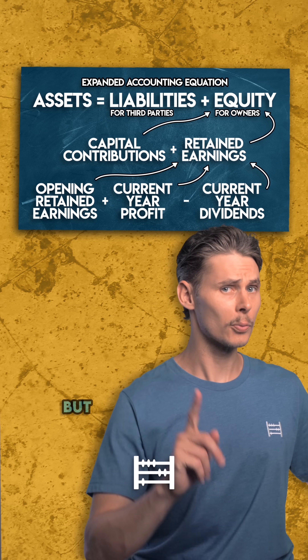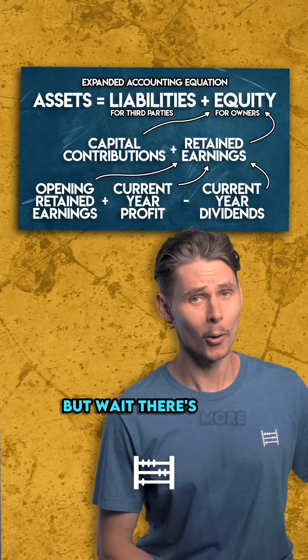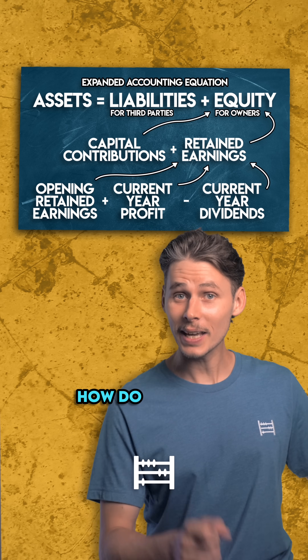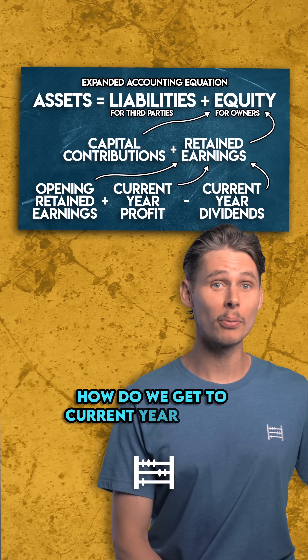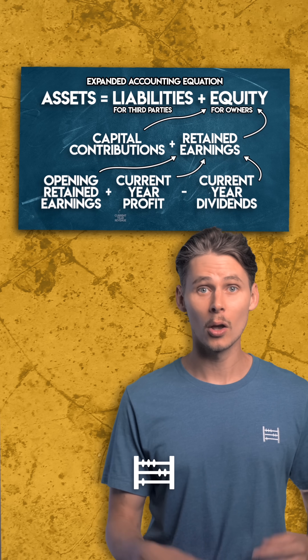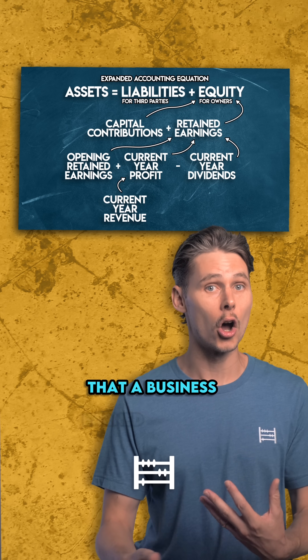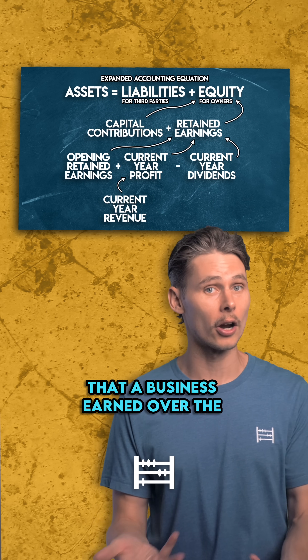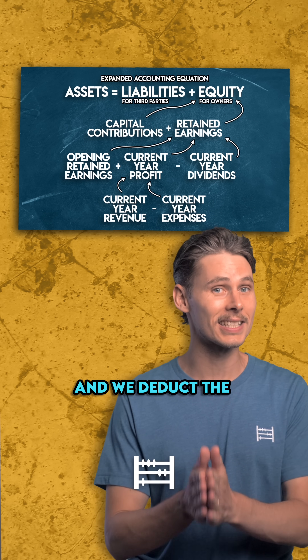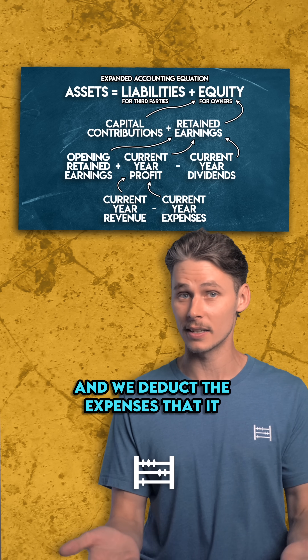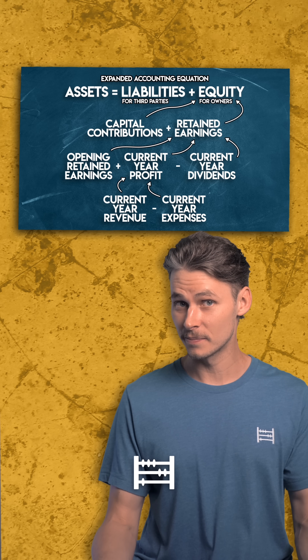But wait, there's more. How do we get to current year profit? We take the revenue that a business earned over the current year and we deduct the expenses that it incurred.